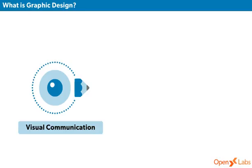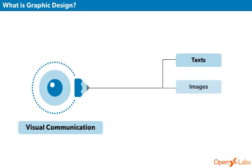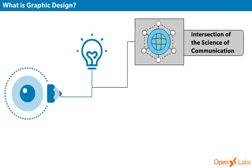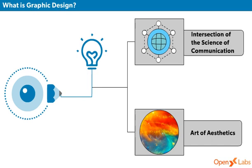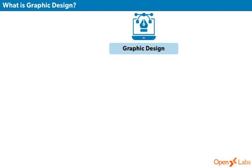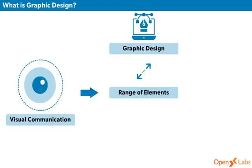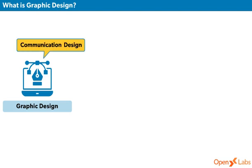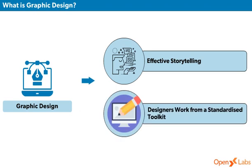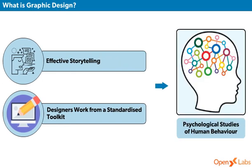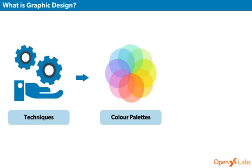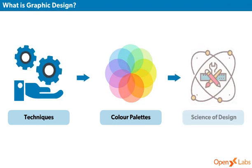Graphic design is an art of visual communication through the use of texts, images, and symbols. This realm of knowledge occupies the intersection of the science of communication and the art of aesthetics. In its most abstract sense, graphic design emphasizes visual communication using a range of elements and different media to promote a specific message. Graphic design, also called communication design, enables more effective storytelling. Designers work from a standardized toolkit of options shaped by peer-reviewed and psychological studies of human behavior. The various techniques designers employ, like using specific color palettes to elicit predictable emotional responses, are part of the science of design.